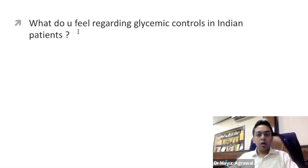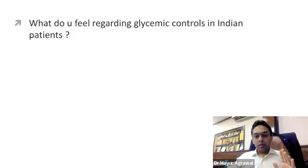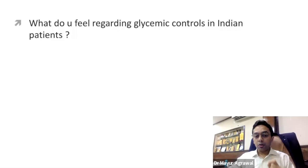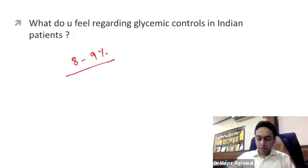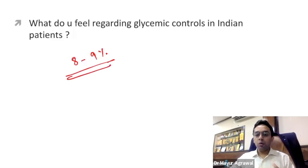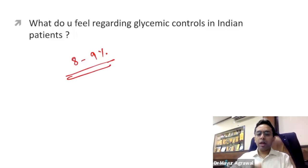If you look at the data — even the latest Indian diet study covering many states of India — it showed that our control is poor. The average HbA1c in any study is somewhere between 8% to 9%. That is not recommended. Even with comorbidities, the target is around 7.5 to 8%, and if the patient is young without comorbidities, we want it around 6.5 to 7%. So yes, our glycemic control is poor.